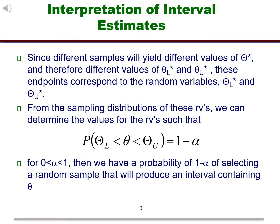Now that we have this interval, what does it mean? Since different samples will yield different values for the estimate and standard error, we will also get different values for the intervals. From the sampling distribution, we determine the endpoints by finding the values so that the inclusive probability given in the slide becomes 1 minus alpha, where alpha is some value between 0 and 1.